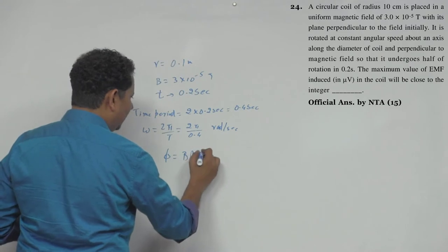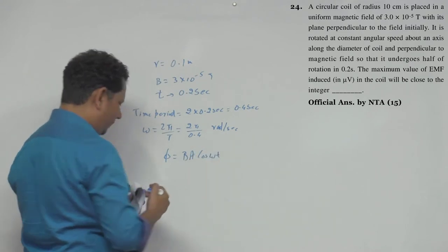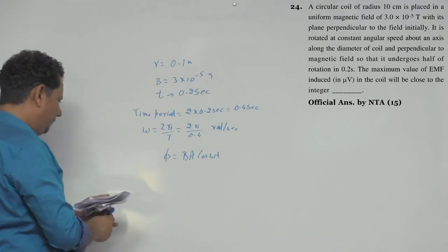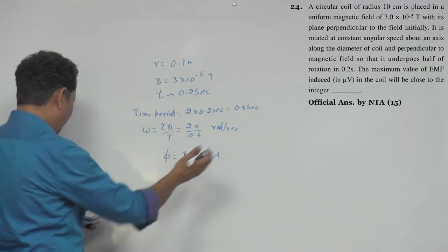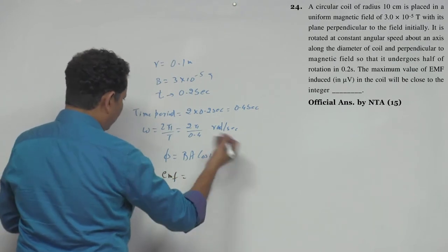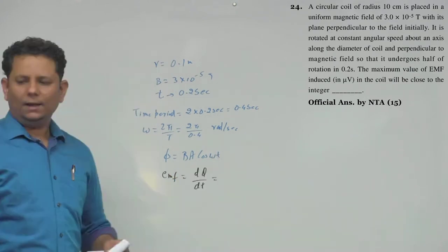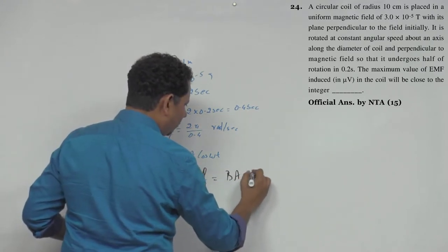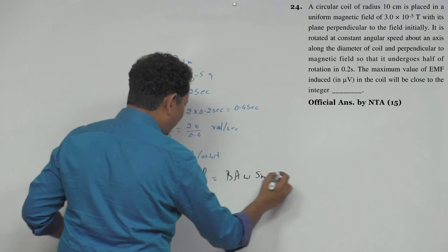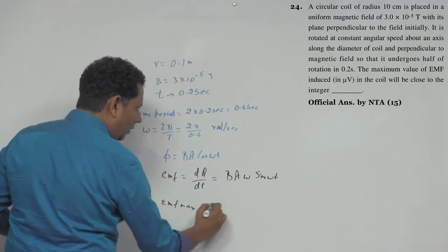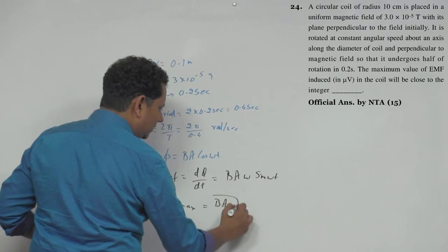Now if we see the maximum value of BA cos omega t, so your emf - this is your flux and your emf we differentiate this. Now after differentiation this becomes BA omega sin omega t. Now emf's maximum value comes as BA omega, this is a simple formula.